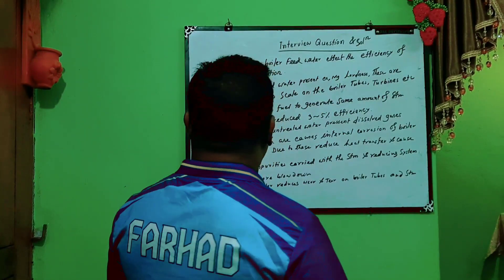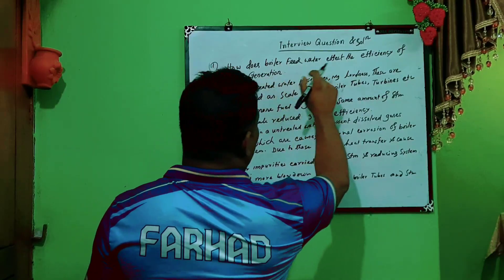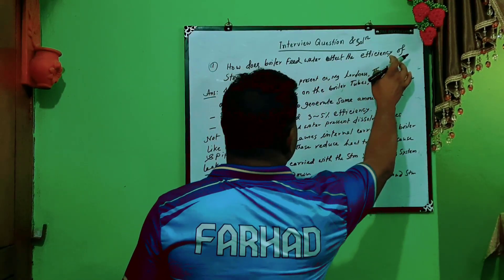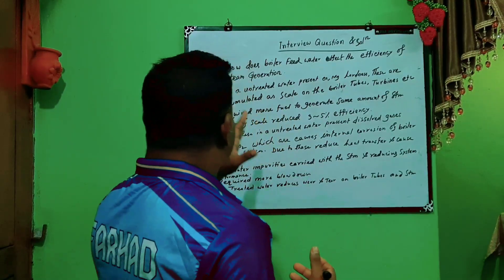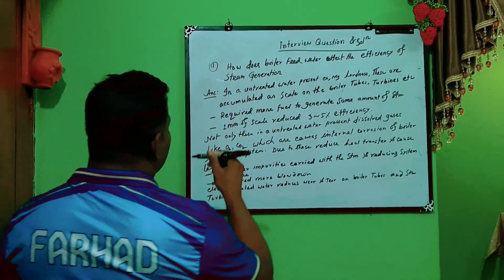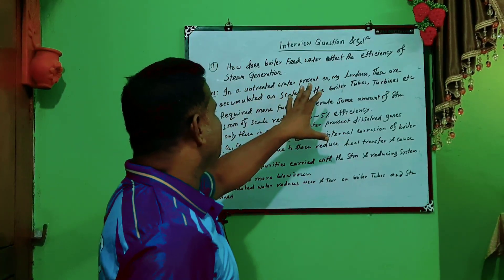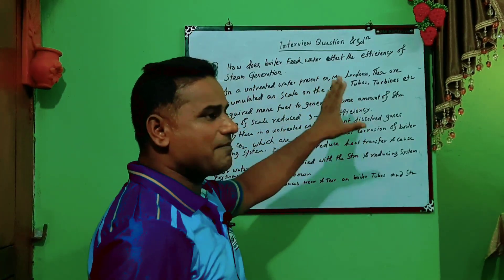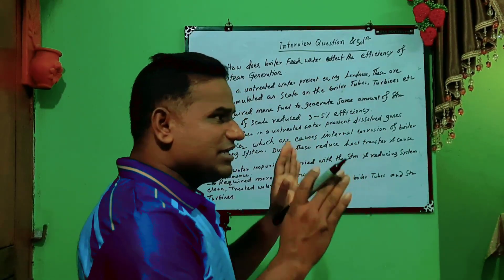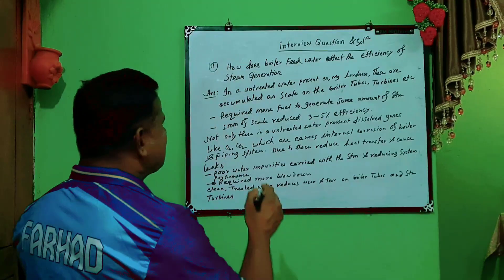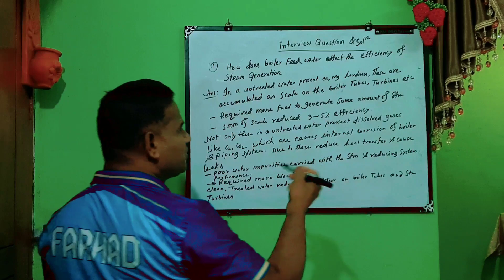Now I will explain question number two: how does boiler feed water affect the efficiency of steam generation? In untreated water, hardness is normally present — calcium hardness, magnesium hardness, and sodium hardness.